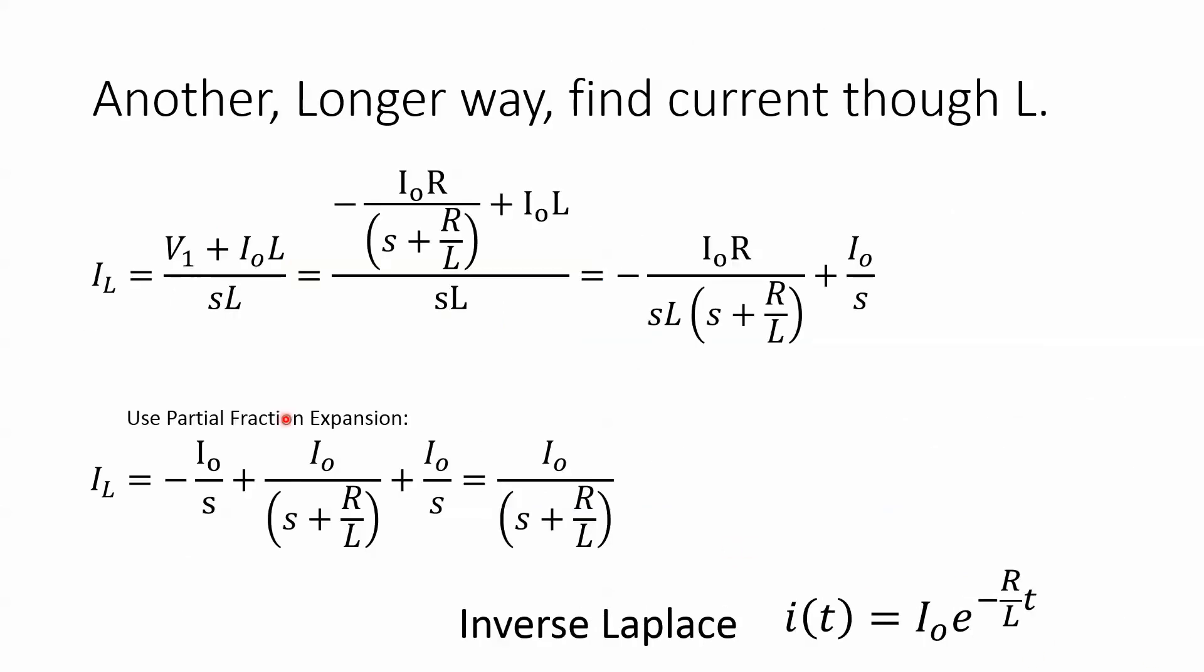Now you can do the same thing by trying to find the current through the inductor directly. So you take that voltage drop and divide it by the impedance. We do some math and we get this equation where we have our initial condition divided by s, we have this, but we got this extra s. What's going on here? Well this isn't really a second order equation, this initial condition is kind of like an input, let's put it that way.